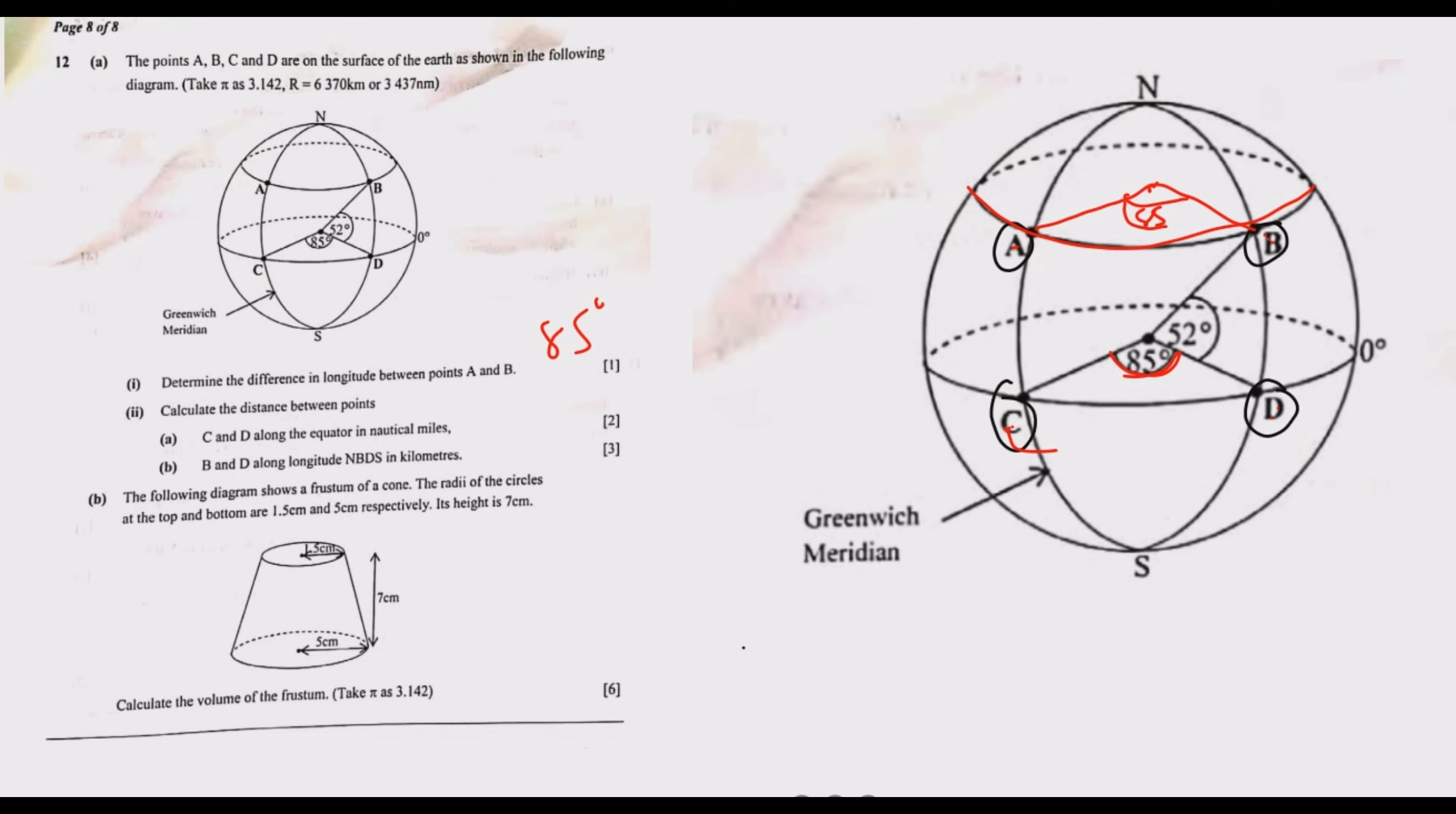Roman numeral 2 asks to calculate the distance between points C and D along the equator in nautical miles. We are being required to find this perimeter, the part subtended by 85 degrees. The formula for perimeter is 2 pi r. Because it's part of the circle, not complete, the distance CD will be theta over 360 multiplied by 2 pi r, which is the radius.